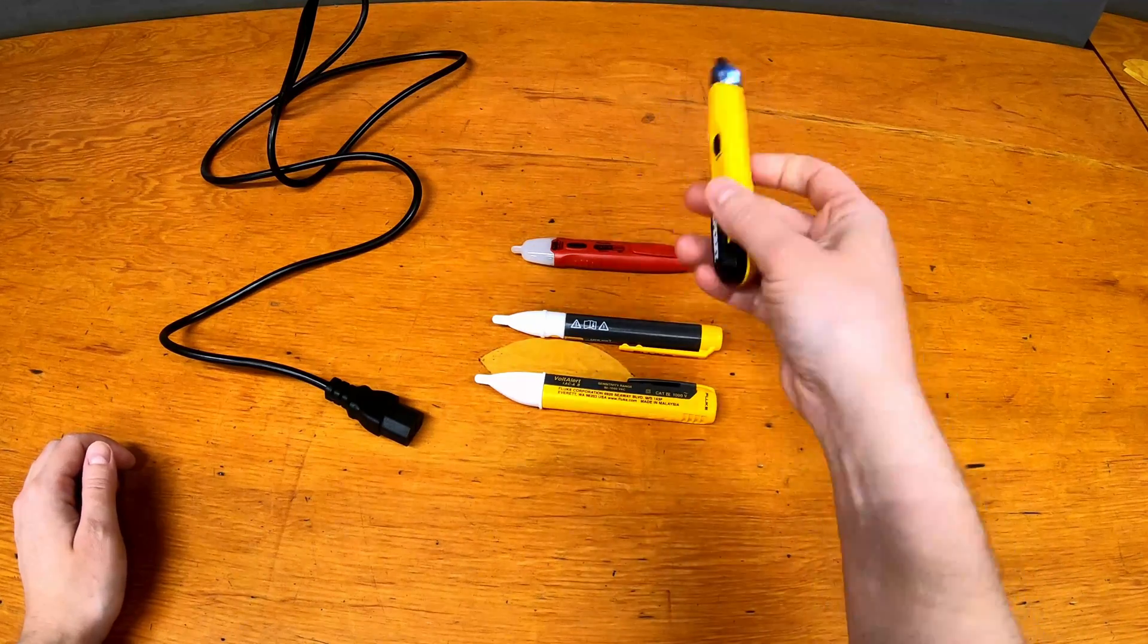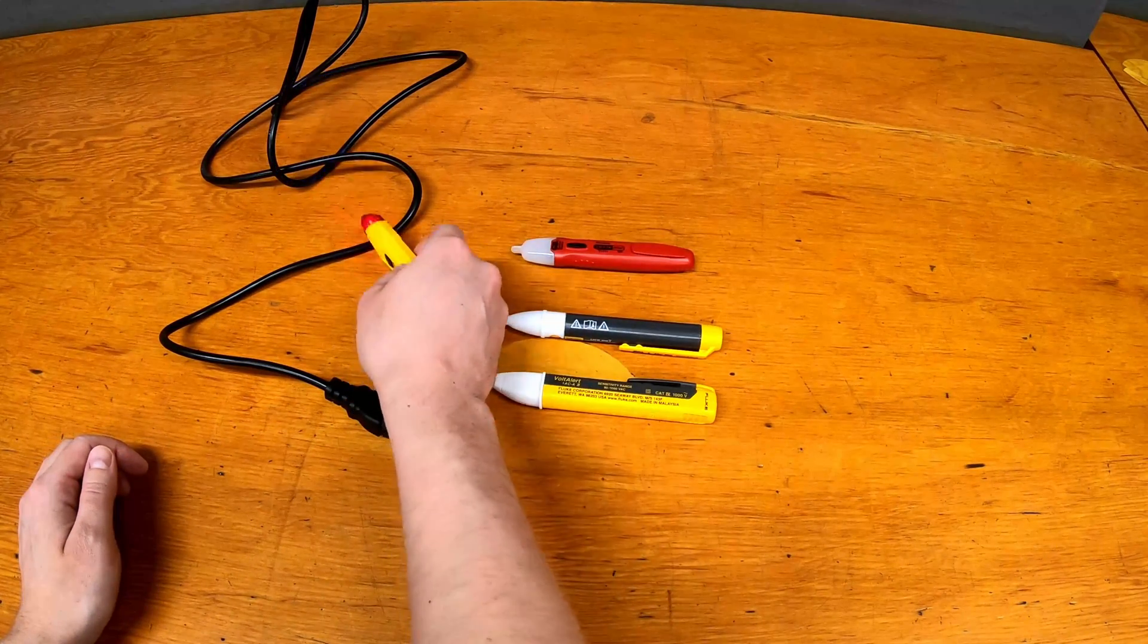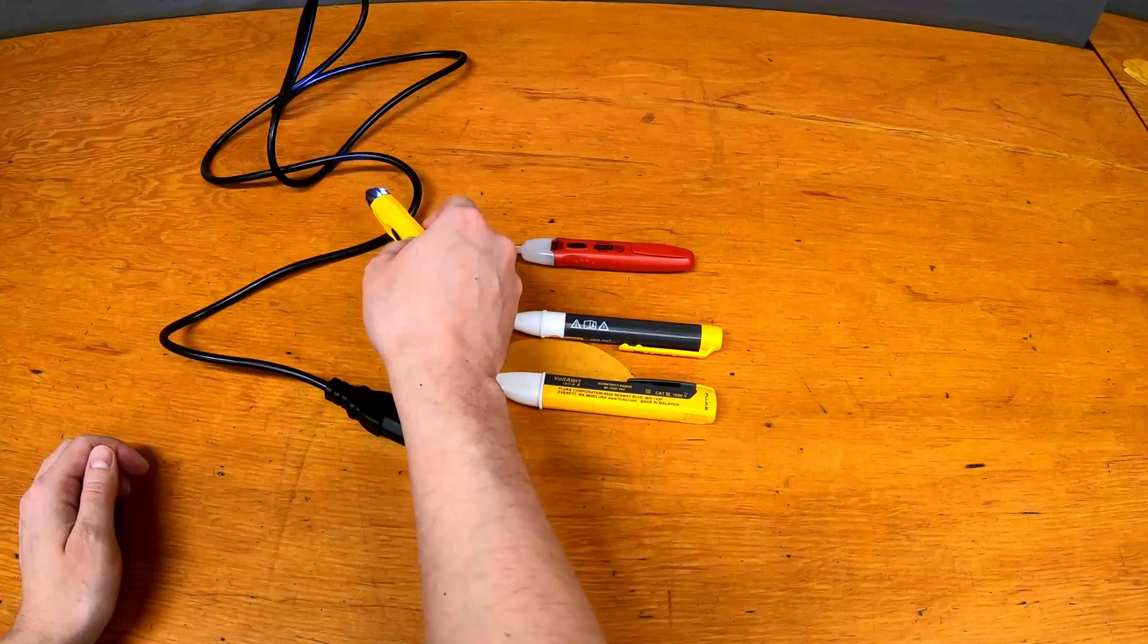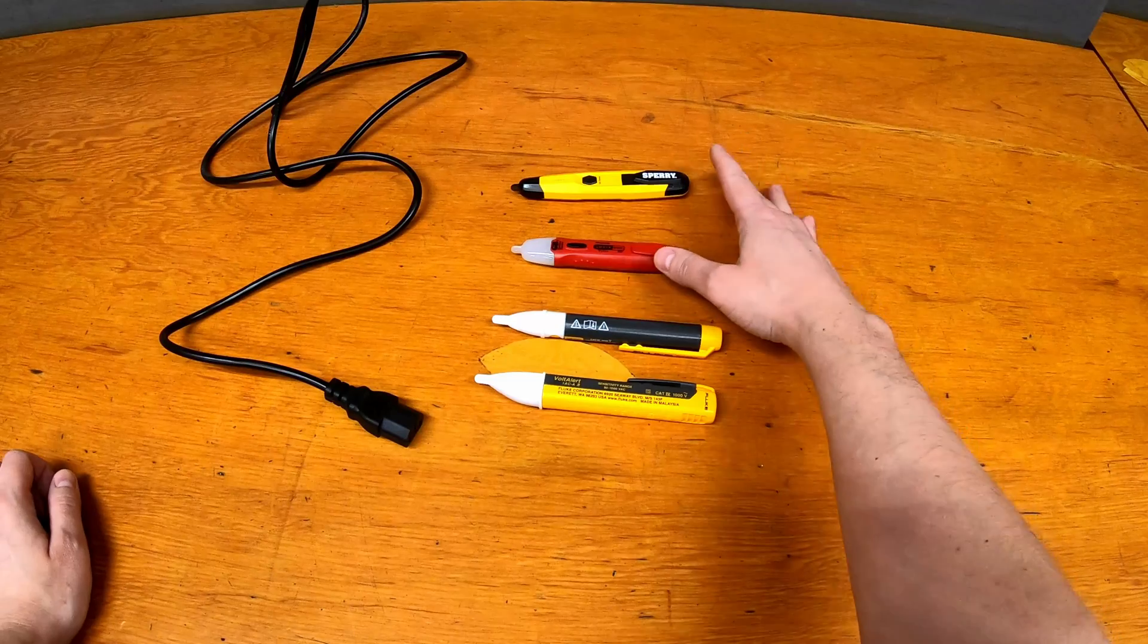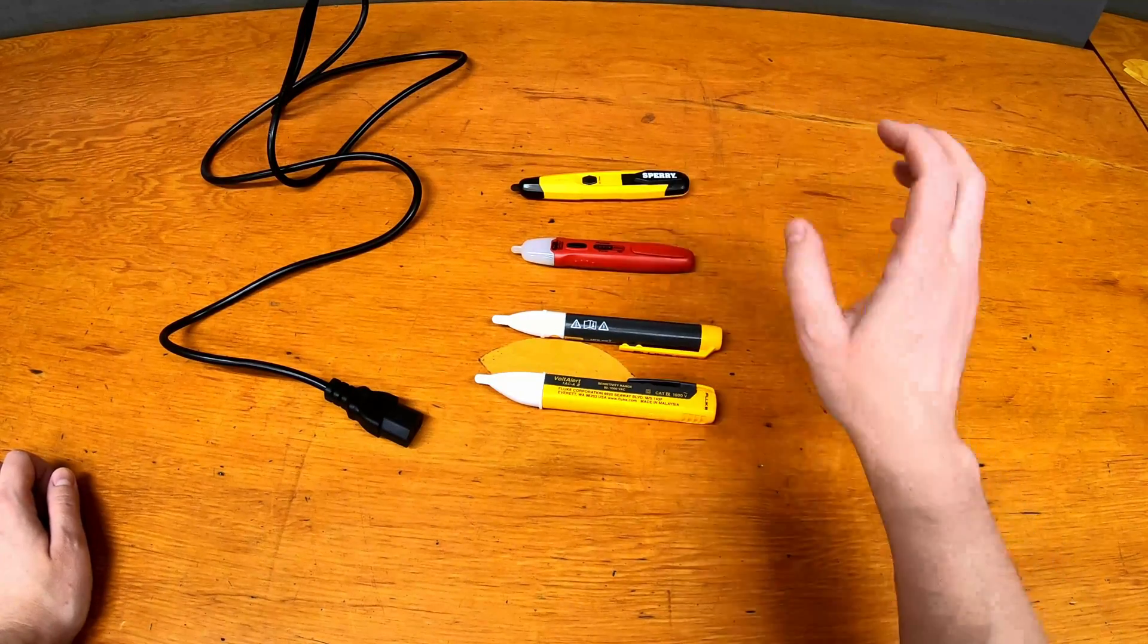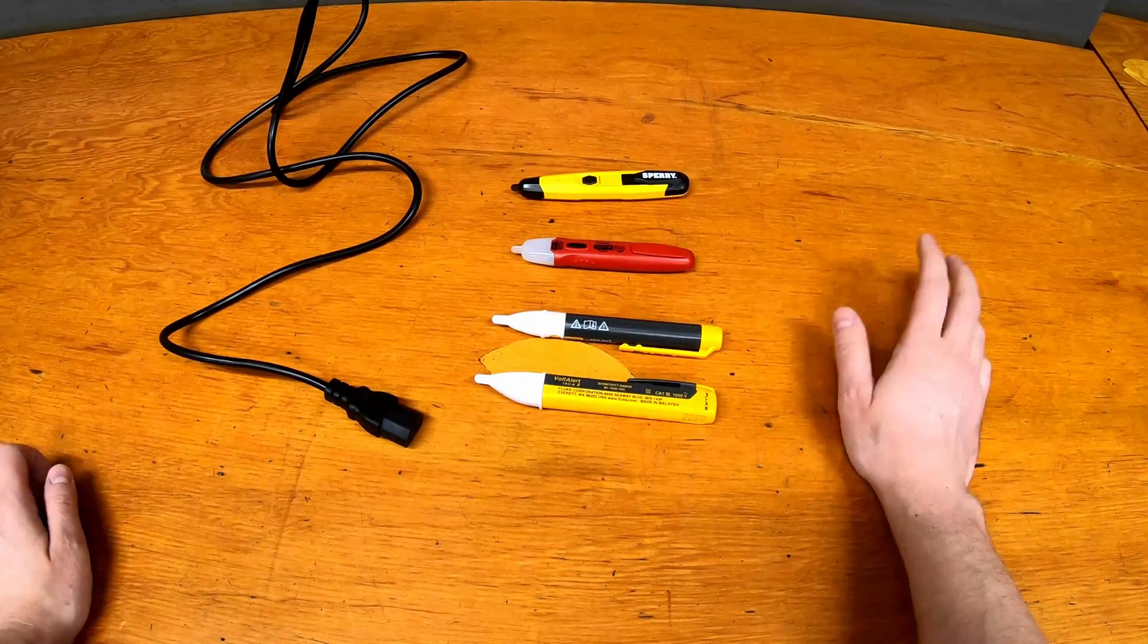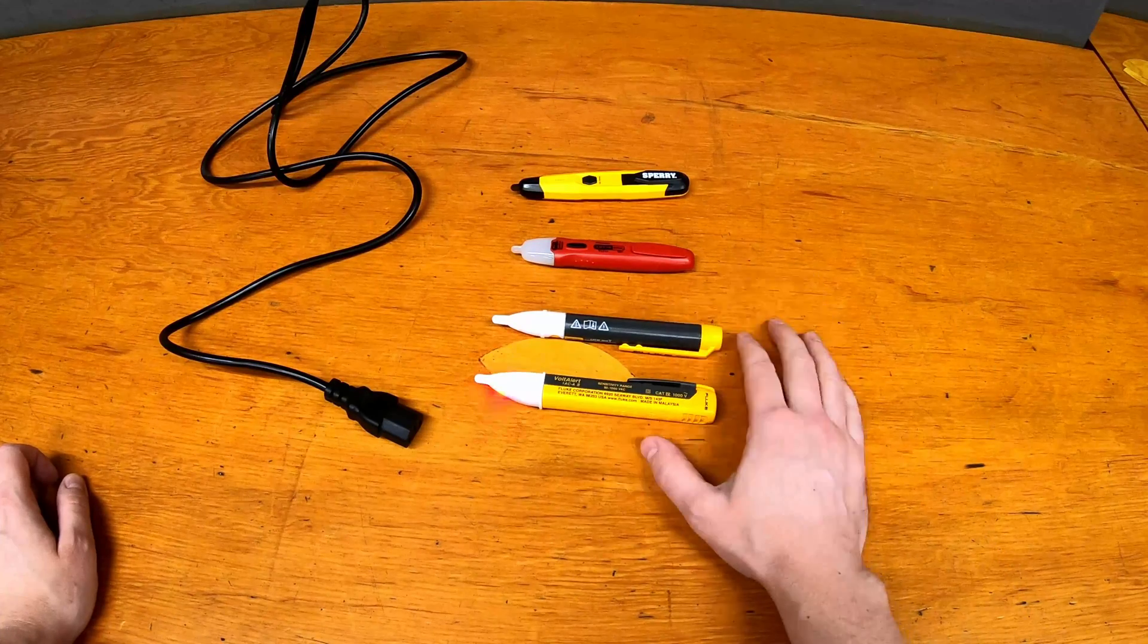And then same with the Sperry here. This one's probably the most sensitive of all of them. As you can see, it keeps beeping even an inch or more away. So it is the most sensitive of them. This is great if you're just trying to make sure, hey, everything in this box is dead before you stick your fingers in. Whereas these, like I said, are better for line tracing.